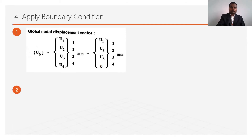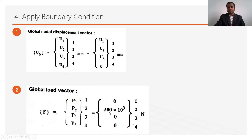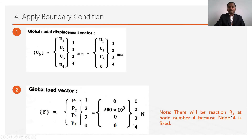The second part of applying boundary conditions is the force vector or load vector. There are 4 nodes, so forces are p1, p2, p3, and p4. At node 1: no force, so p1 = 0. At node 2: a force of 300 × 10³ is applied. At node 3: no force, so p3 = 0. At node 4: the body is fixed, so a reaction R4 will form at that node.